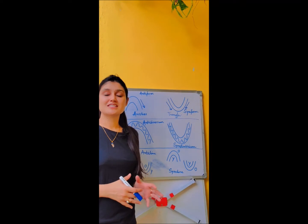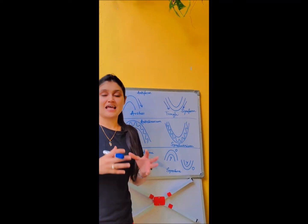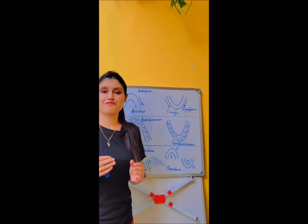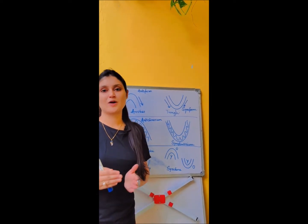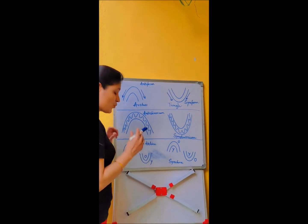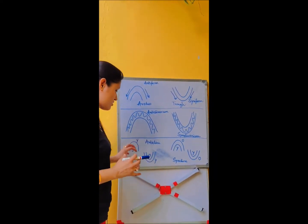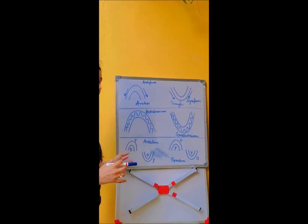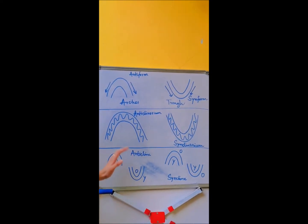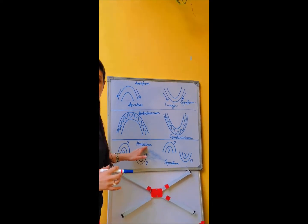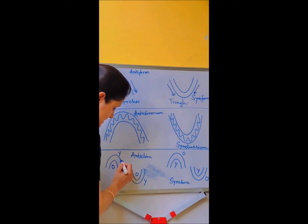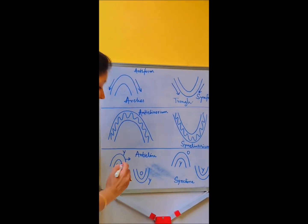Coming towards the anticline and syncline: anticline and syncline represent the chronological order of any bed or strata exposed in the field. Whenever the older rocks are present at the core part and younger rocks are exposed at the outer surface, it is known as an anticline. It can be antiform anticline.